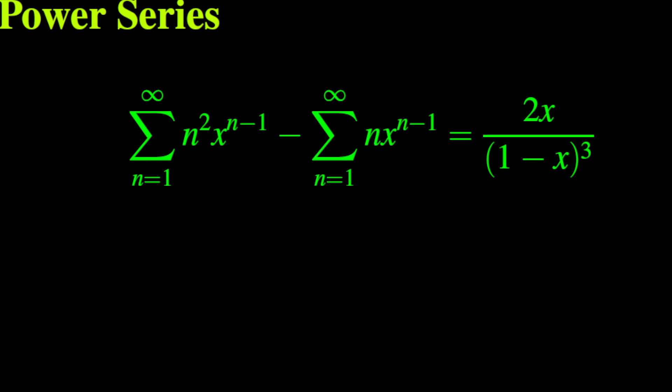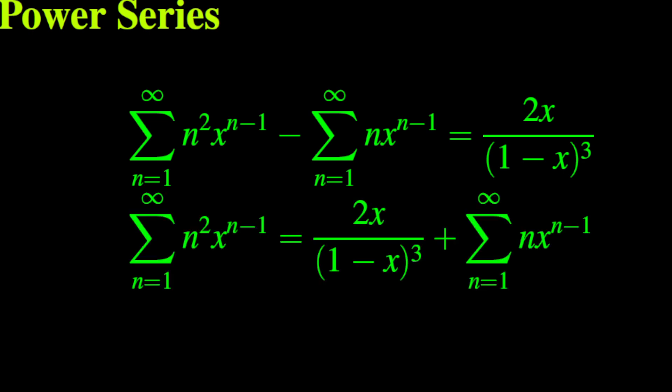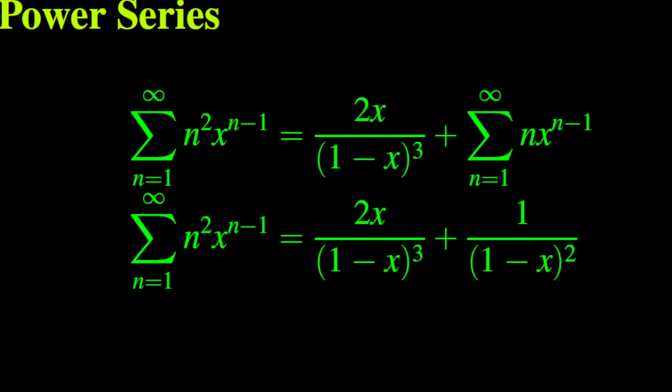We rearrange the equation and break the left side into a difference of series. Then we have: the sum from 1 to infinity of n squared times x to the power n minus 1 equals the fraction 2x over (1 minus x) cubed, plus the sum from 1 to infinity of n times x to the power n minus 1. On the left-hand side, the sum from 1 to infinity of n squared times x to the power n minus 1 equals 2x over (1 minus x) cubed, plus 1 over (1 minus x) squared.